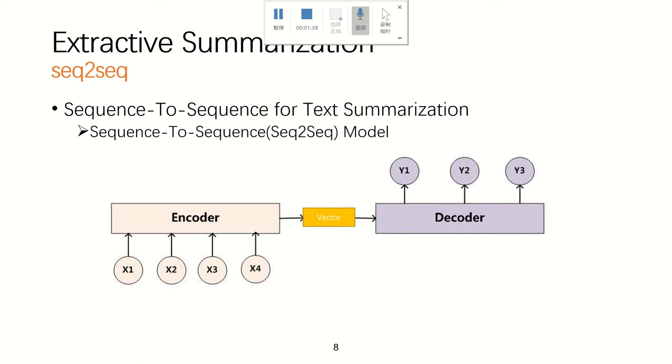Then we use decoder to decode the vector into a classification result sequence, which means the input text can or cannot be extracted as a summarization. With the classification result sequence, we can get a summarization from the original text.